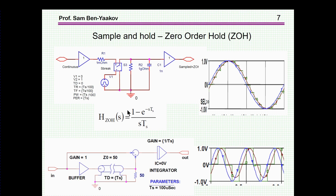Another element used in digital control is the sample and hold. The sample and hold is a switching circuit — we have a switch, the input is sampled, stored, and output at the sampling rate. If the blue signal is the input, the stepwise green signal is the output: we sample here, it stays constant, then we sample again and it stays constant, and so on.